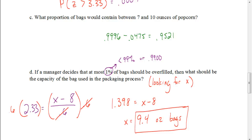Well, that's it — that is the end of this lesson. Hopefully now you have a better idea of how to find z-scores, and once we find those z-scores, how to use them to find the probability. Good luck as you work on your assignments.